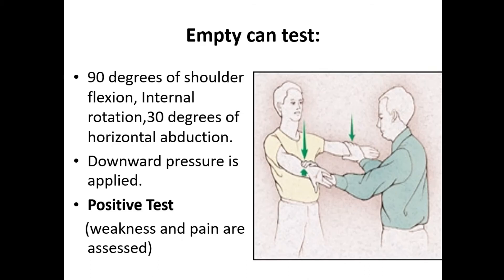Empty Can test: In this test, the patient's arm is placed in 90 degrees of shoulder flexion, internal rotation, and 30 degrees of horizontal abduction. The examiner applies downward pressure on the patient's arm. The test is positive if weakness and pain are assessed.